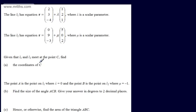In this video, we're going to continue our work with vectors and look at another typical question we might be asked. Line L1 has equation R = (2, 3, -4) + λ(1, 2, 1), where λ is a scalar parameter.